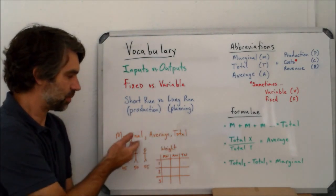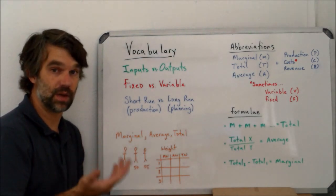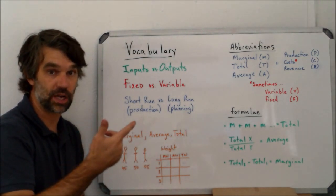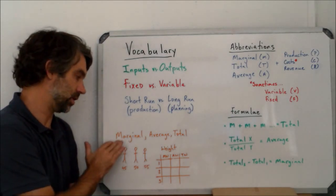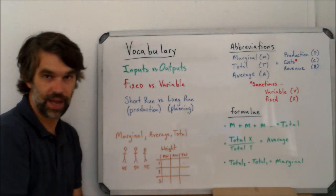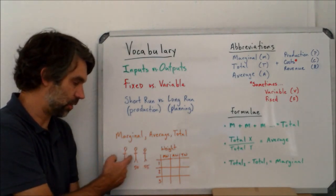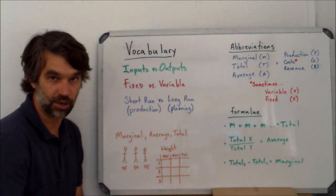The next set of terms we have are marginal, average, and total. These are all different ways of looking at the same number, whether it be revenue or production or costs. We can look at the same thing three different ways. I'm going to use weight as my example, talking about three different people and their different weights in kilograms.